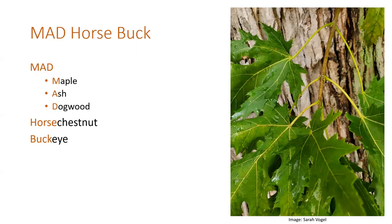There are only a few trees in Illinois that are oppositely arranged — a mnemonic device for oppositely arranged native trees is 'MAD horse buck.' MAD is M-A-D: maple, ash, dogwood. Horse is for horse chestnut and buck for buckeye. Horse chestnut and buckeye are pretty closely related. These are trees in Illinois — there are certainly some other large shrubs in other families that are opposite, and there may be trees native to other places that are exceptions to this rule. But for our purposes, we're talking about Illinois trees.